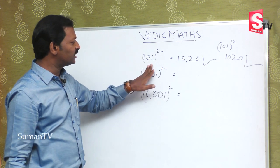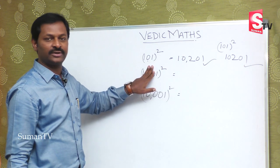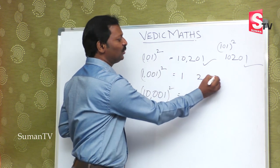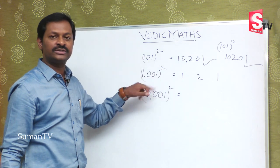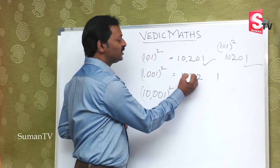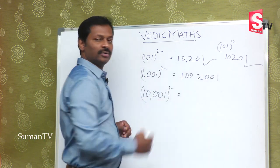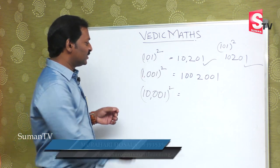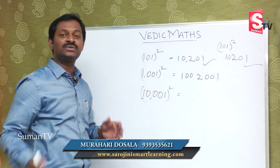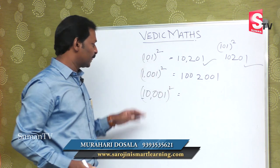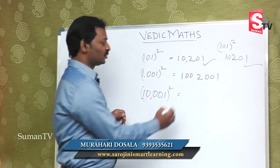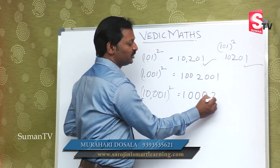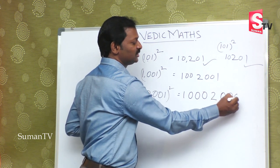For 1001 squared: there are two zeros. If you close these two zeros, again you get 11. So 11 squared is 121. Being two zeros in between, we write 00 in each gap. Now checking: 1, 1 gives 1, 2, 1. So the answer is 1, 002, 001 — that is 1002001.